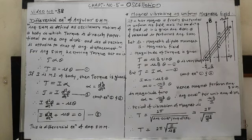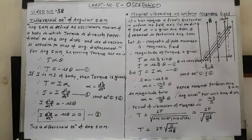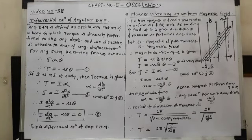At the start of this chapter, we saw the differential equation of linear SHM — that means motion along a straight line. The differential equation of angular SHM means motion along a curved path, along a circular path. This is nothing but the angular SHM.